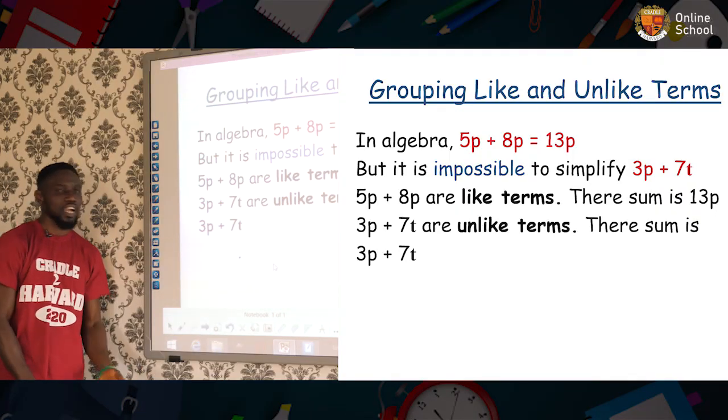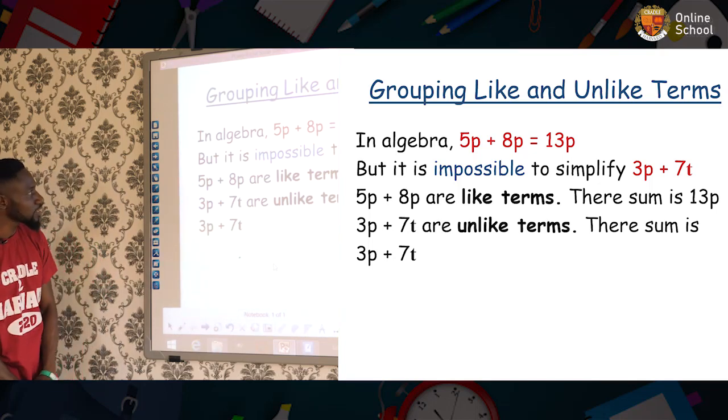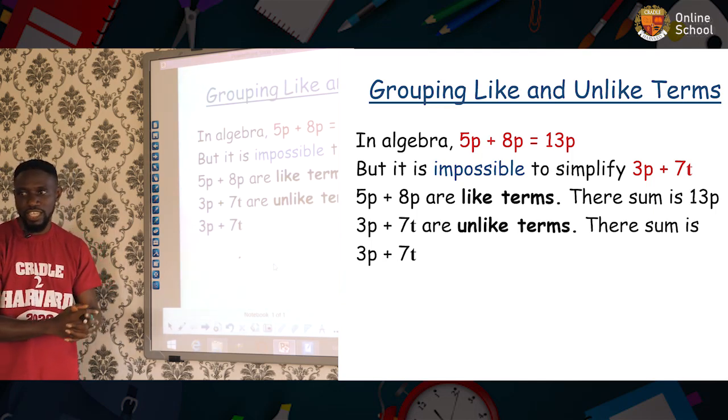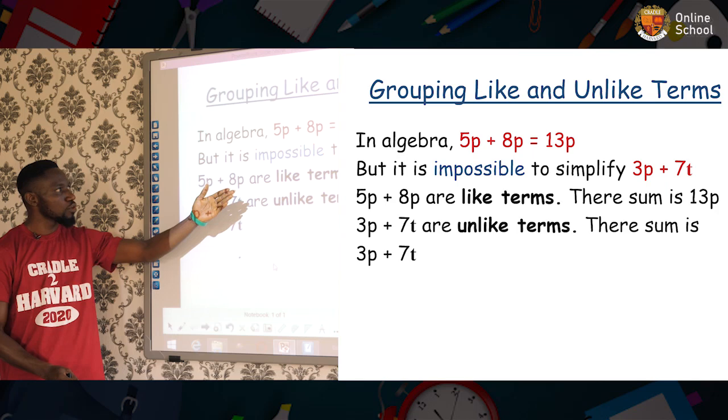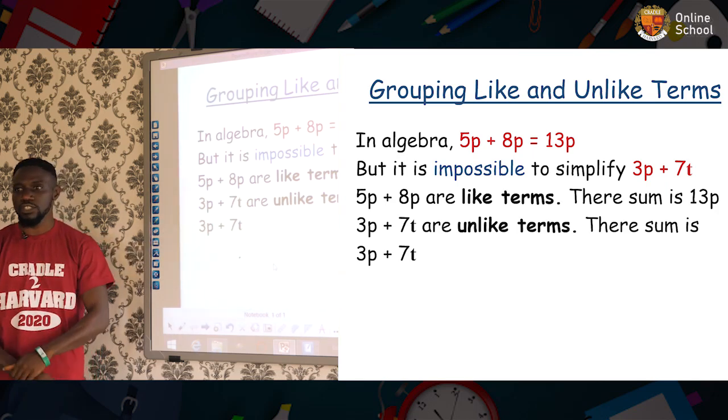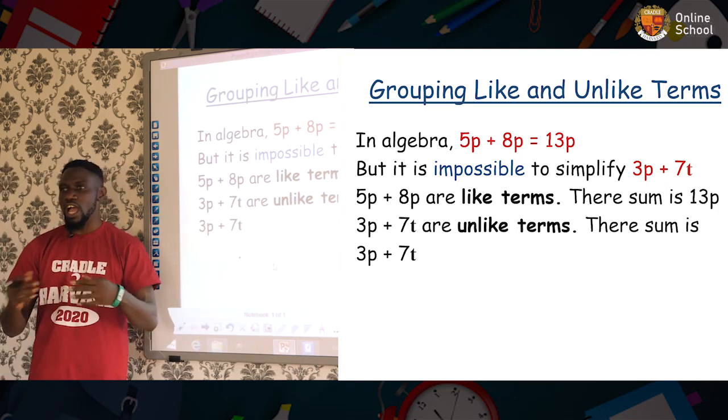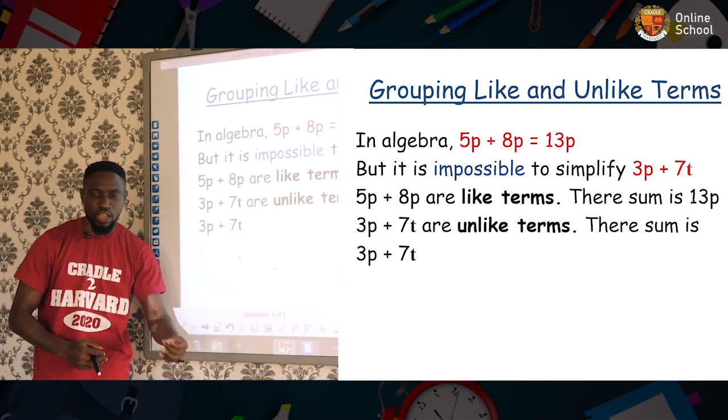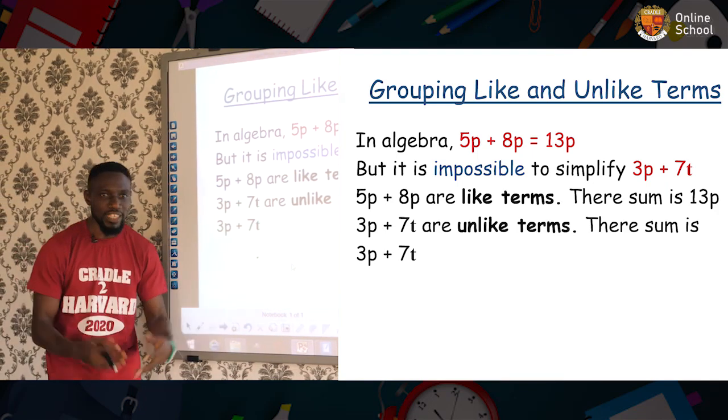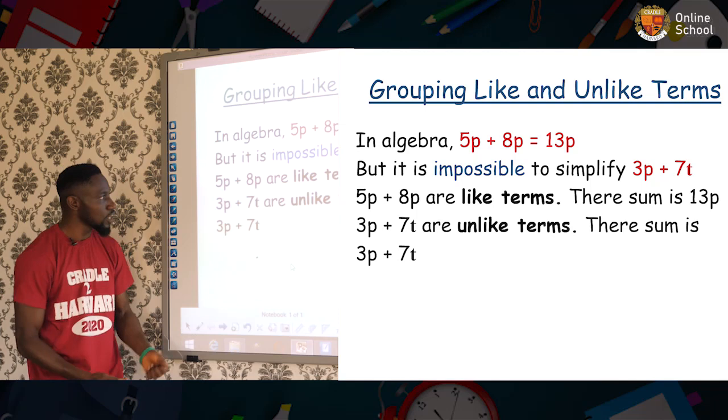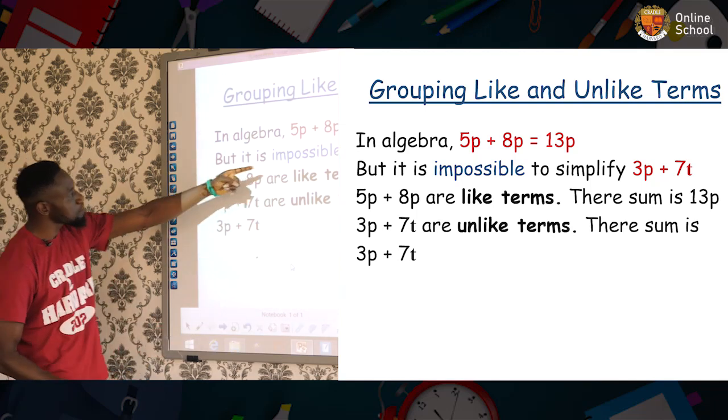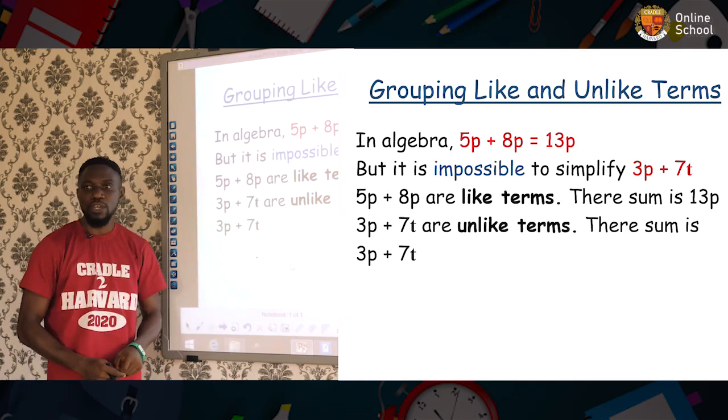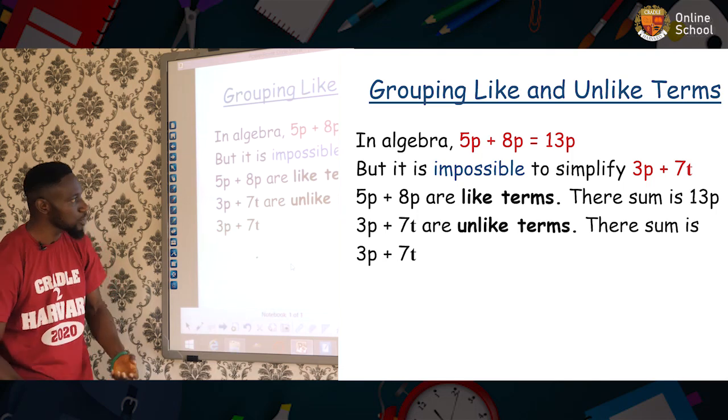All right. Now, we are looking at grouping like and unlike terms. You see, in algebra, terms that are the same can be grouped. You can add them together just like I said before. We said 5p + 8p is going to give us 13p. But in a situation whereby you have terms that are expressed differently, let's say for example, you have 2a + 3b, it cannot be added together. Why? Because they are in different terms. So it's the same thing I wrote here. But it is impossible to simplify 3p + 7t. Why? Because they are unlike terms.